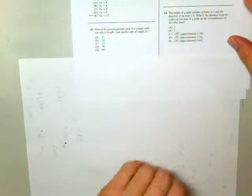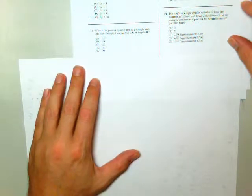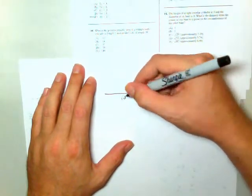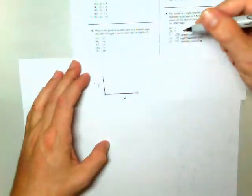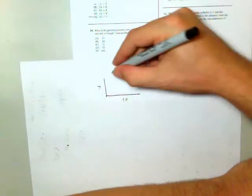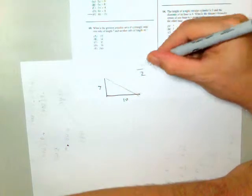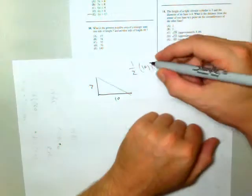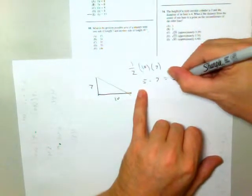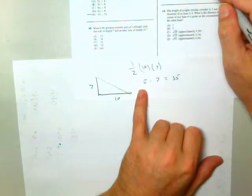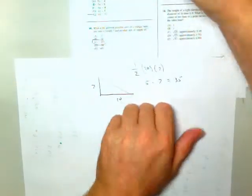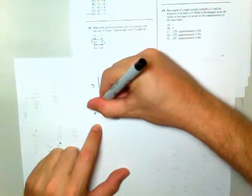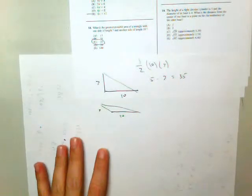What is the greatest possible area of a triangle with one side length 7 and another side length 10? Well, if I make these sides, it's 1 half base times height. And this is 1 half of 10 is 5 times 7 is 35. And for number 10, that's the correct answer. 35, well, it doesn't matter if the 7 is this way and the 10 is this way, these two triangles will have the same area as long as that's really 7 and that's really 10.